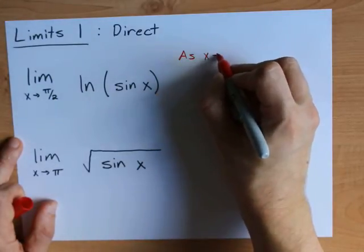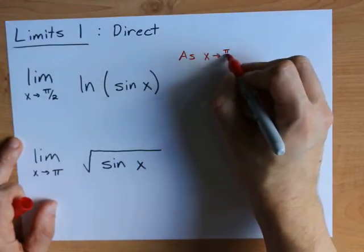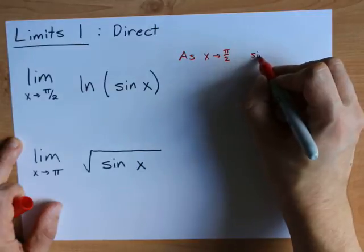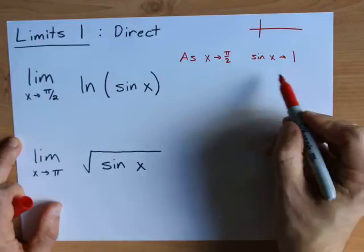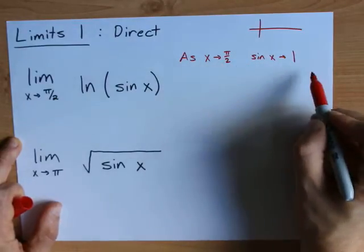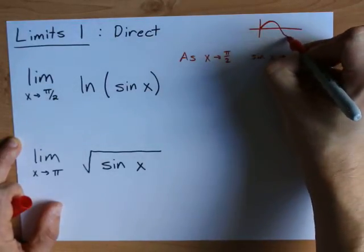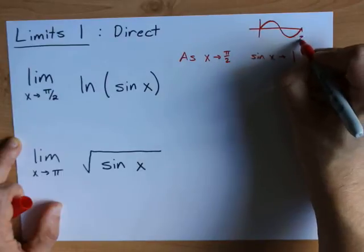I'm going to write this out fully so you can see my logic. As x approaches pi over 2, sine x approaches 1. I know that because first of all the sine of pi over 2 is 1, but I've also memorized the graph of sine, which has a period of 2 pi.